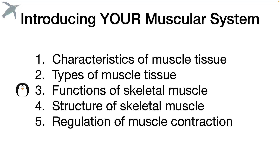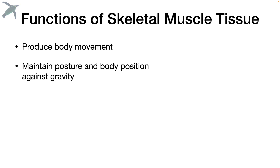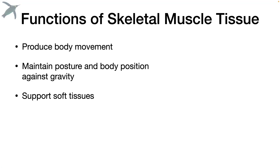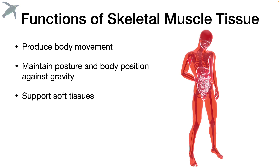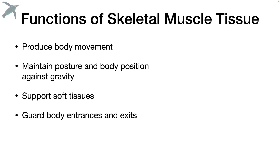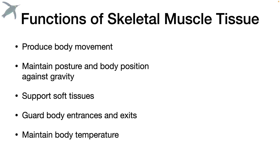Next, the functions of skeletal muscle. The obvious one is how your body moves. In addition, skeletal muscles help us maintain posture and stand up against gravity. Skeletal muscle helps support and protect soft tissues — think about how your abdominal muscles protect your guts underneath. A lot of people forget this one, but we need to guard the body entrances and exits — I'm talking about sphincters. Also: regulation of body temperature and a nutrient reserve. If you're not taking in enough calories, your body can burn muscle for fuel.